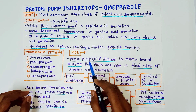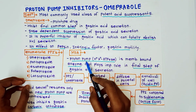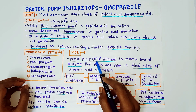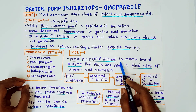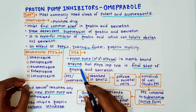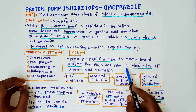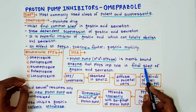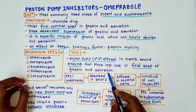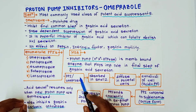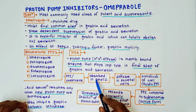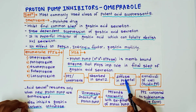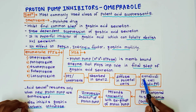Now the mechanism of action of proton pump inhibitors or omeprazole. The proton pump — that is the H⁺/K⁺ ATPase pump — is a membrane-bound enzyme that plays an important role in the final step of gastric acid secretion. Proton pump inhibitors are absorbed in the small intestine and diffuse into the parietal cell, then into the canaliculi of the parietal cell.